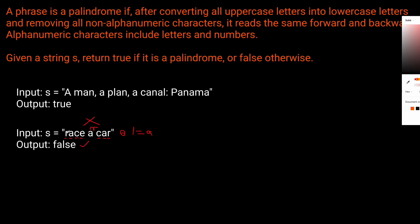So that's basically how we're going to do it. We're going to initialize two pointers — one starting at the beginning of the string and one at the end — and we're going to compare the current values using dot lower, because the problem tells us to ignore case differences. If the characters match we move the left pointer up one and the right pointer down one, while also making sure the current character is alphanumeric. If not, we keep moving the pointer in the appropriate direction.